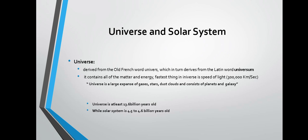The universe was formed 13.6 billion years ago. The solar system is 4.5 to 4.6 billion years old. And as we discussed earlier in the previous videos, Earth was formed 4.54 billion years ago — so Earth was formed after the establishment of the solar system.